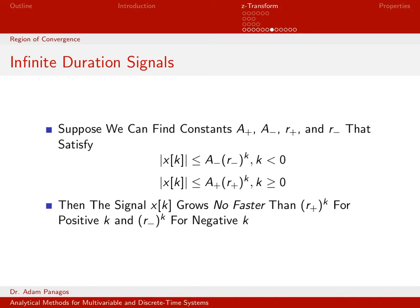Picture some arbitrary X of K and pick A minus and R minus such that this inequality is always true for all negative K. If we can find these numbers — A minus and R minus are just numbers — we have found values that bound and cap this signal for negative time.